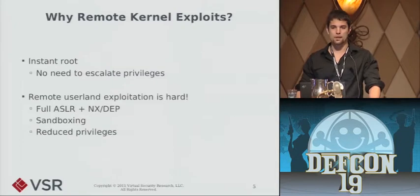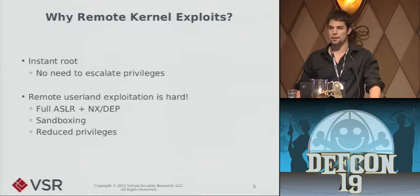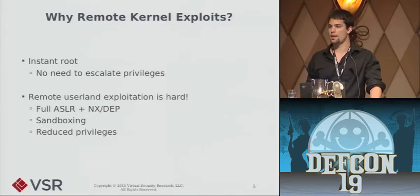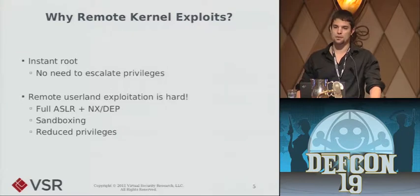Remote kernel exploits sort of speak for themselves as to why they're useful. It's the keys-to-the-kingdom concept — instant remote root access to a machine you previously had no interaction with. Especially compared to client-side exploits like browsers, where you're frequently facing ASLR and NX or DEP, sometimes requiring a second vulnerability to bypass. You may then be running inside a browser sandbox, as IE9, Chrome, and Safari now provide. Escaping that sandbox requires a third vulnerability, and you may need a fourth to escalate privileges. That seems like a lot of pain, so I prefer to skip all that.